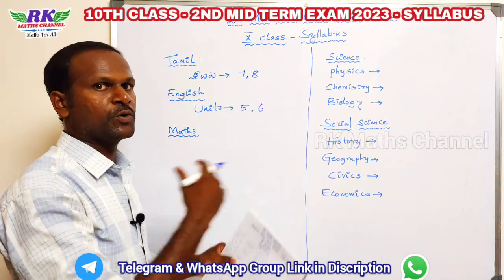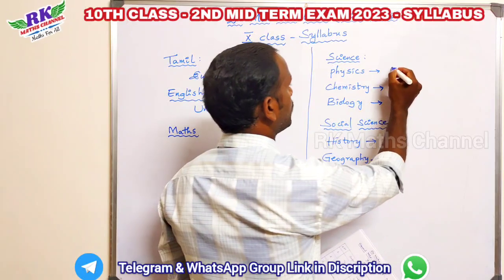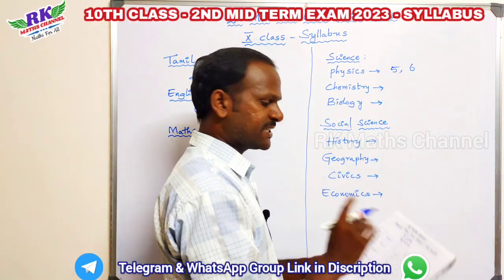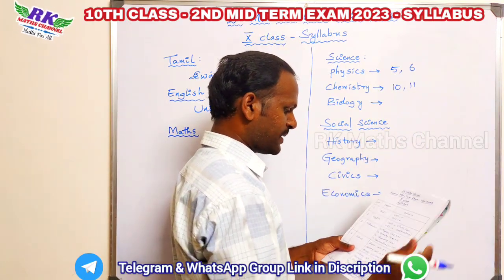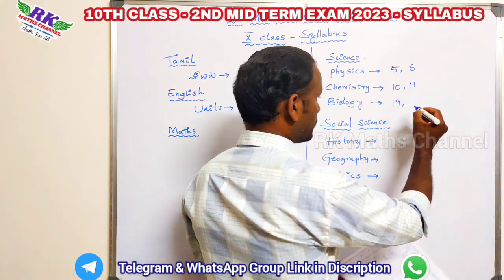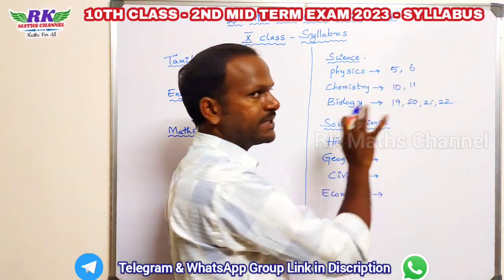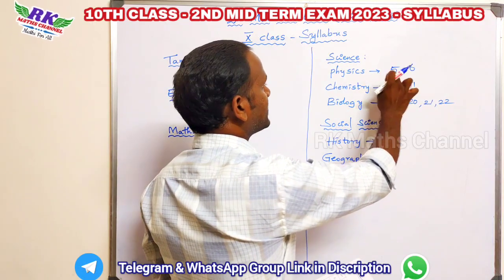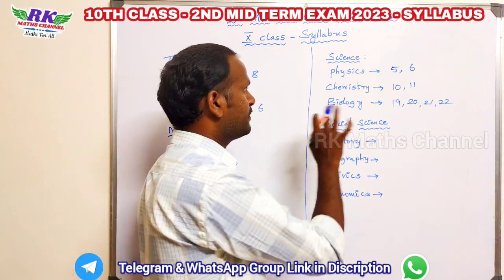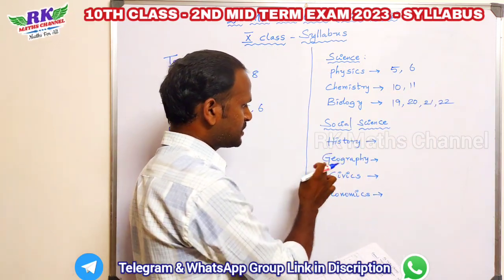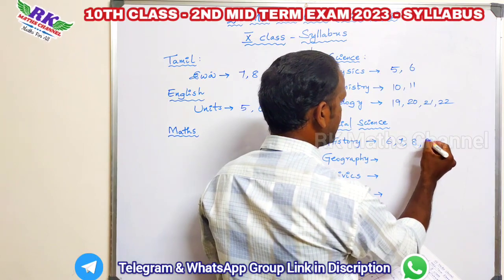For Science: Physics Unit 8, Chemistry Units 10 and 11, Biology Units 19, 20, 21, and 22. Science total: 8 units — Physics, Chemistry Units 10 and 11, Biology Units 19 to 22.